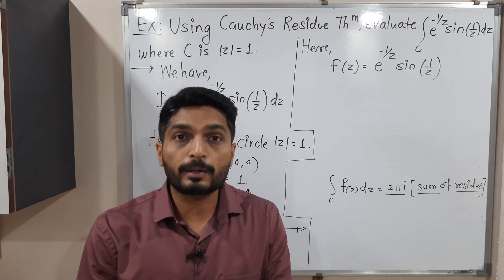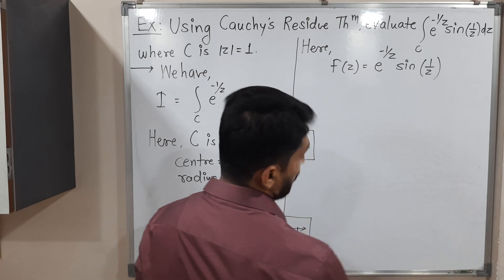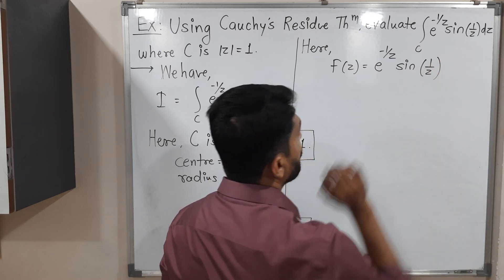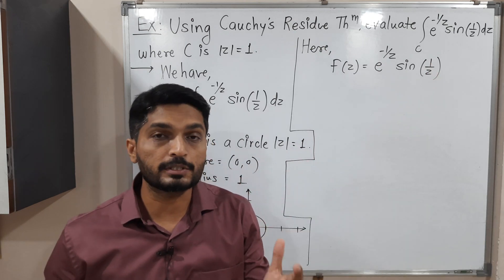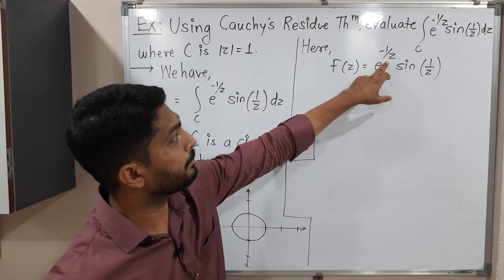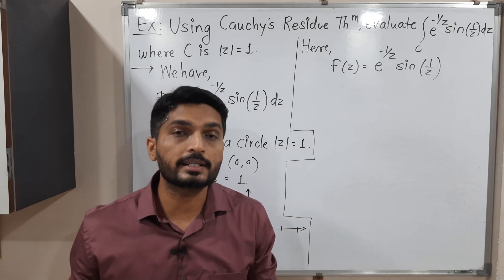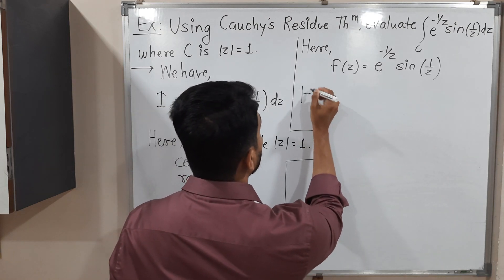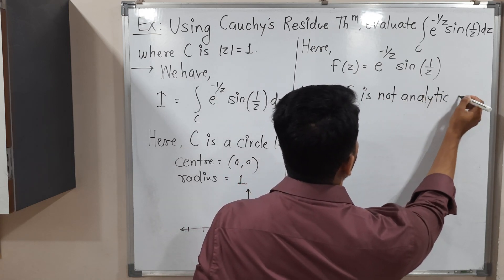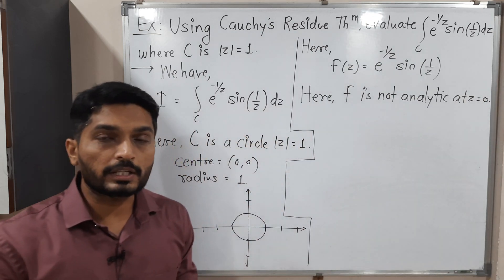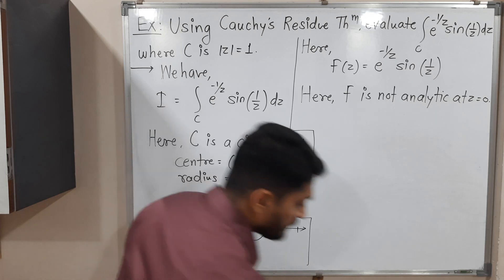First, we have to find the singular points — where the function is not analytic. This function has no explicit denominator, but inside sin we have 1/z and in the exponent also. If z = 0, we get 1/0, which is infinity, so f is not analytic at z = 0. Therefore z = 0 is the singular point. Now, z = 0 is the origin, which clearly lies inside the circle of radius 1.